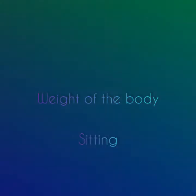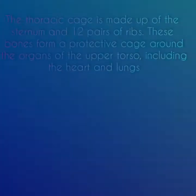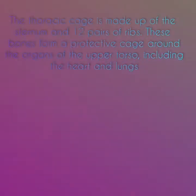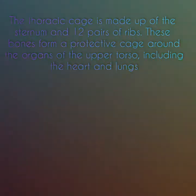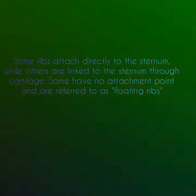The sacrum and tailbone help support the weight of the body while sitting and also serve as attachment points for various ligaments. The thoracic cage is made up of the sternum and 12 pairs of ribs. These bones form a protective cage around the organs of the upper torso, including the heart and the lungs.